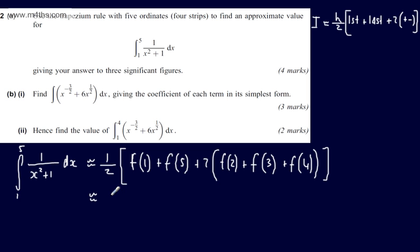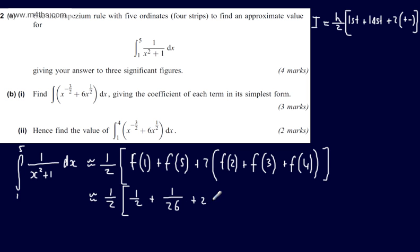This is going to be approximately equal to one half. For f(1), substituting 1 in: 1 squared is 1, giving 1/2. For f(5), substituting 5 in: 25 plus 1 gives 1/26. Then plus 2 lots of f(2), which gives 1/5, plus f(3), which gives 1/10, plus f(4), which gives 1/17.